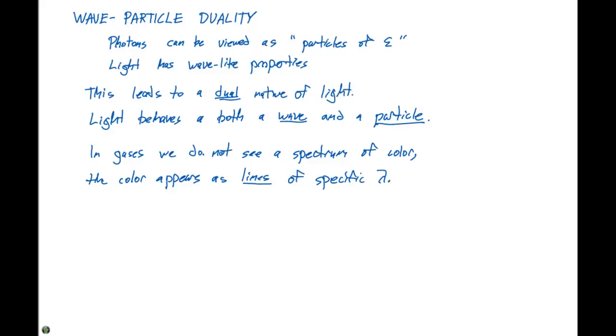The color appears as lines of specific wavelength. This is different than white light because we're now seeing lines of specific wavelength. We know that wavelength is related to energy, so chemists at the time were trying to work on how they could relate the energy to lines in these line spectra.